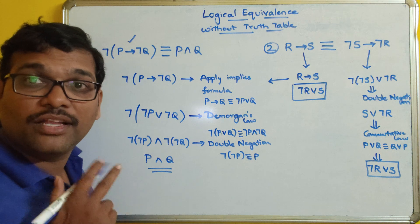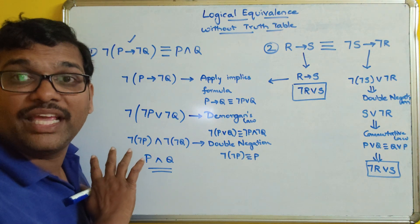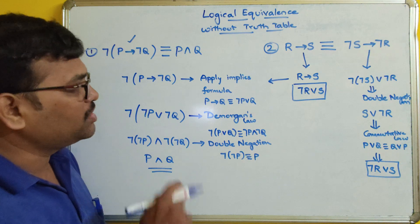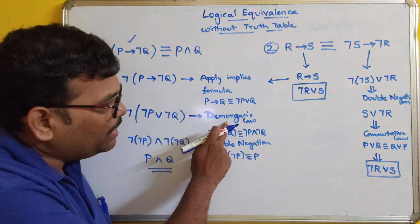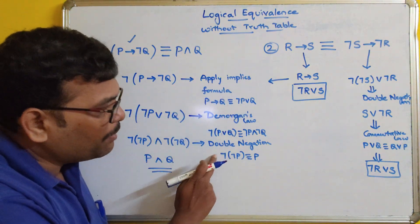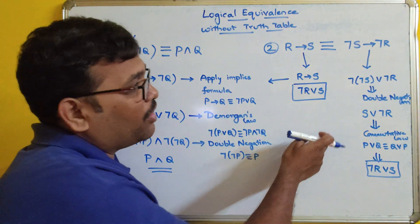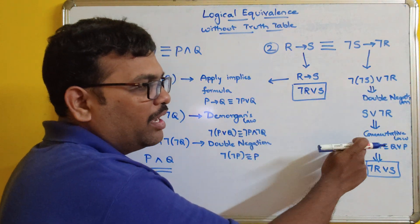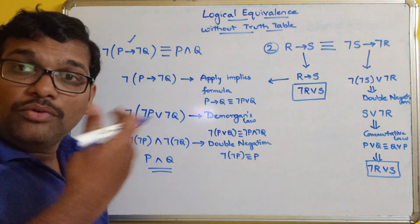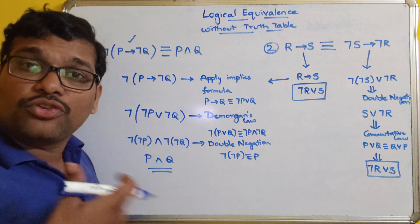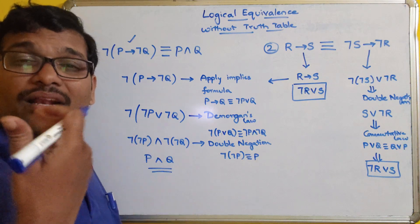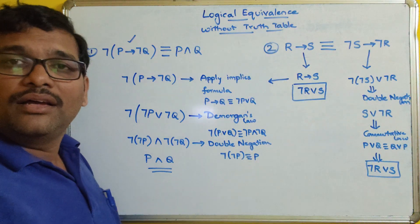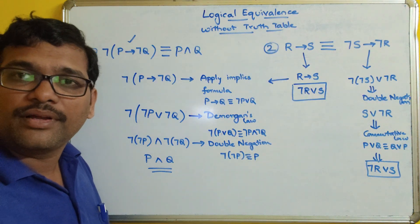So these are the two kinds of problems. In the first case, we consider LHS and derive to get the corresponding RHS directly. In the second case, we derive LHS to a formula that cannot be expanded further, then do the same for RHS, and if both give the same formula, they are logically equivalent. Here we are applying laws only — implies, De Morgan's law, double negation, and commutative law. We have many laws such as associative and distributive that we can also use.